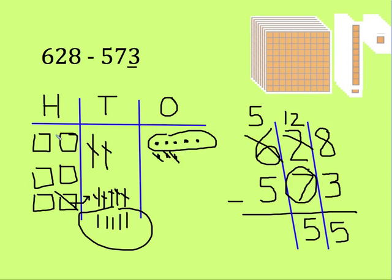Last but not least, I have 5 hundreds. I want to take away 5 hundreds. 1, 2, 3, 4, 5. I don't have any hundreds left. Everything has been crossed off. Your answer should have been 55.